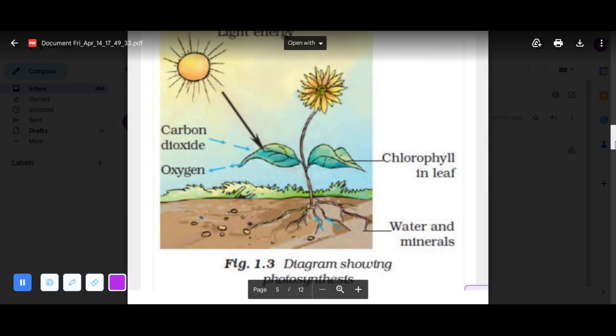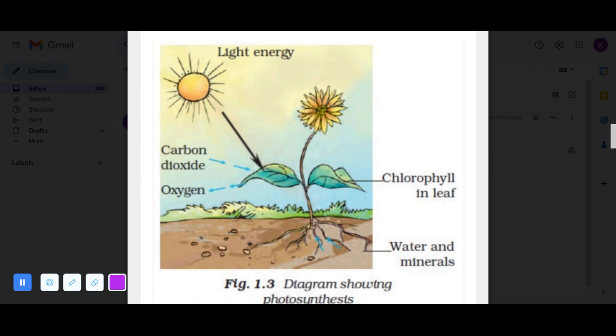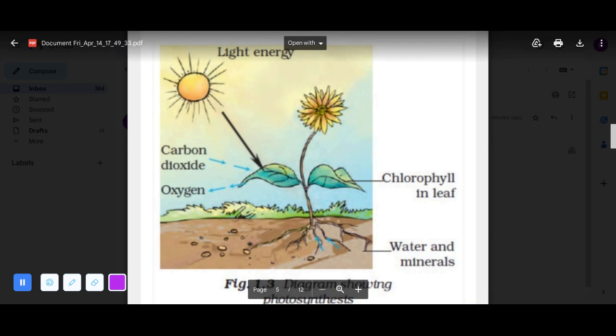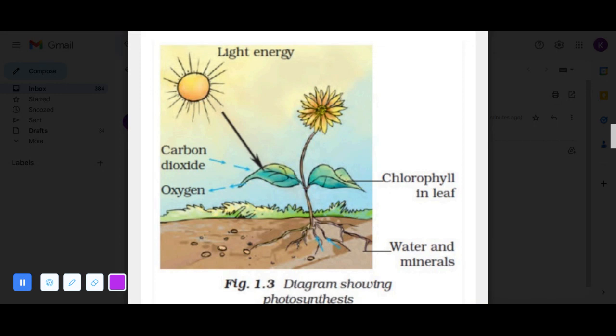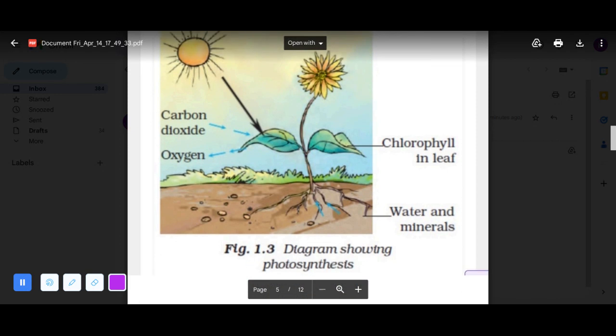Here you can see this is a plant and the chlorophyll is present in leaf. Water and minerals are taken by the roots. Oxygen is taken out from the plant. Carbon dioxide is taken in by the plant, and sun is the light energy of the plant.